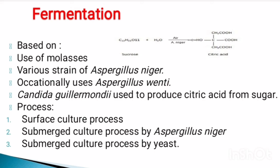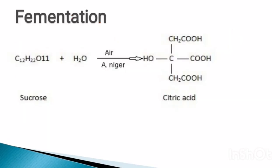An outline of the production: sucrose or sugar is acted upon by Aspergillus niger, which requires air for its growth, and produces citric acid — a weak organic acid. In summary, sucrose plus water gives citric acid.